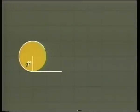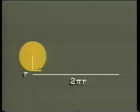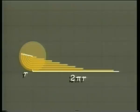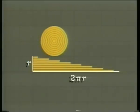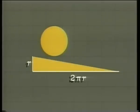Here's another method: divide the disk into concentric rings, unwrap them, and pile them up like this. As we take more and more rings, the stack looks more and more like a right triangle with base 2πr and